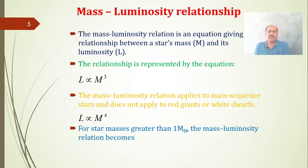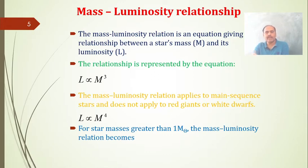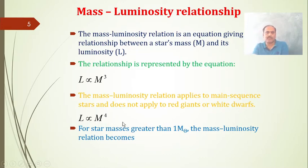This slide shows the mass-luminosity relation, which gives the relationship between the mass and luminosity of a star. Luminosity is directly proportional to the cube of the mass of a star. This applies to main sequence stars — stars that appear on the main sequence of the HR diagram. For giants and white dwarfs, the relation takes the form L ∝ M⁴.